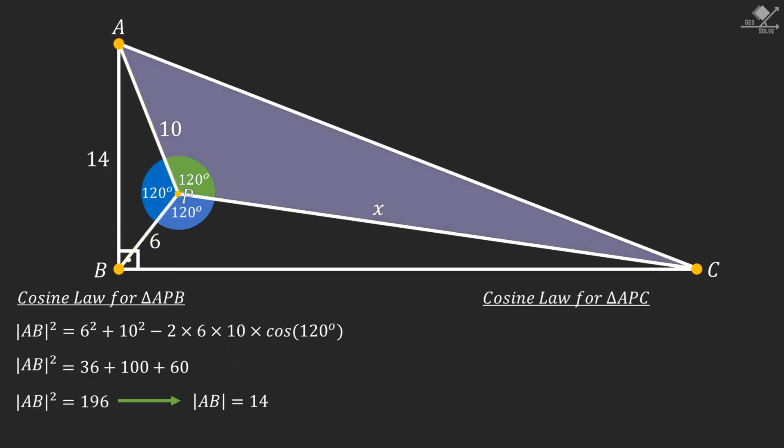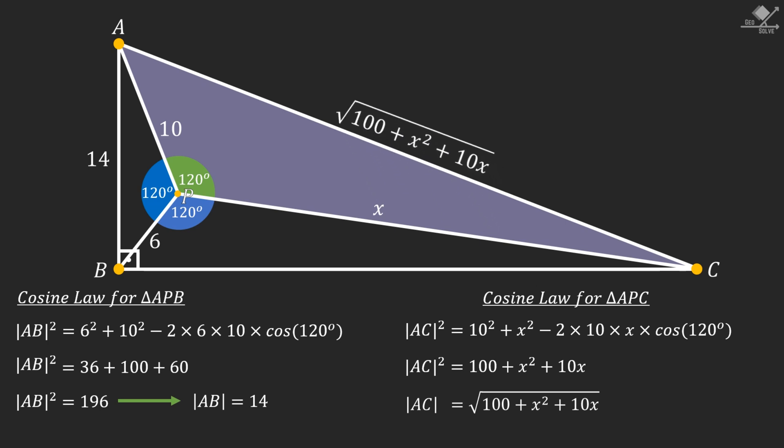Now focus on this triangle and use cosine law again. With a similar approach, AC squared will be equal to this term on the right side of the equation. With similar simplifications, AC squared will be equal to 100 plus x squared plus 10x. So the length of the line segment AC is square root of these terms. Let's also show that on the figure.